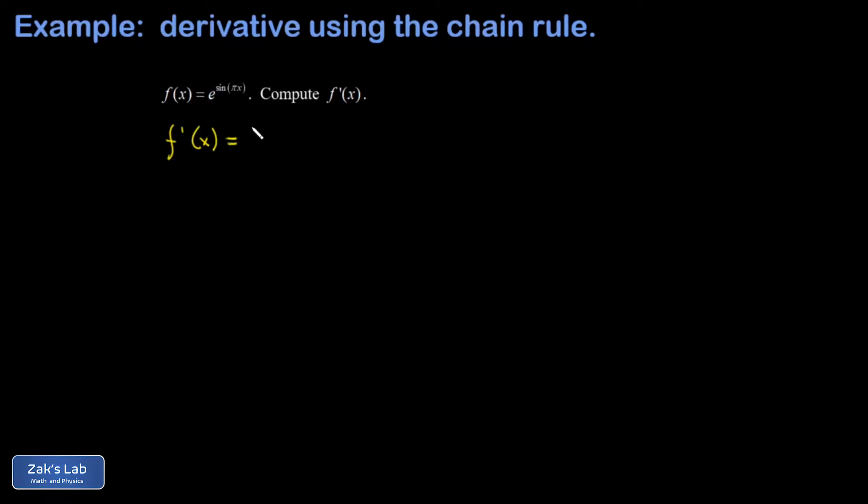And this is actually a function of a function of a function. So the first thing we have is e to this power, and we differentiate with respect to that power. So differentiating e to the sine pi x with respect to sine pi x means we treat that exponent as a single variable for a moment, and we just get e to the sine pi x, because e to the x is equal to its own derivative.